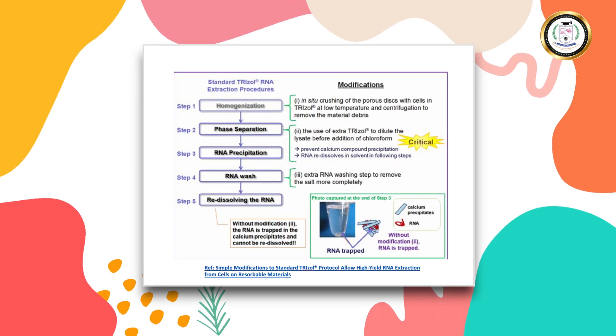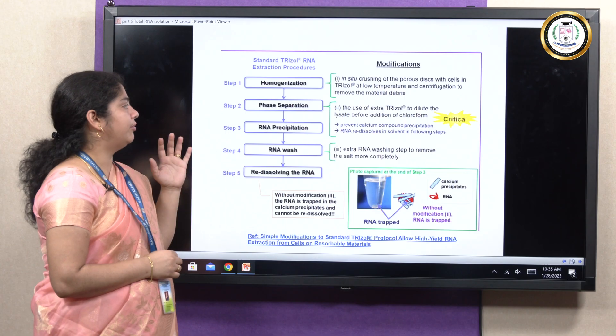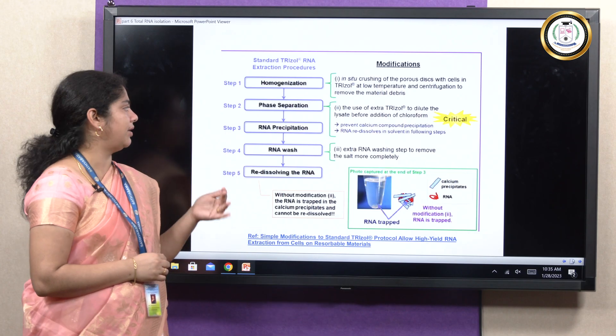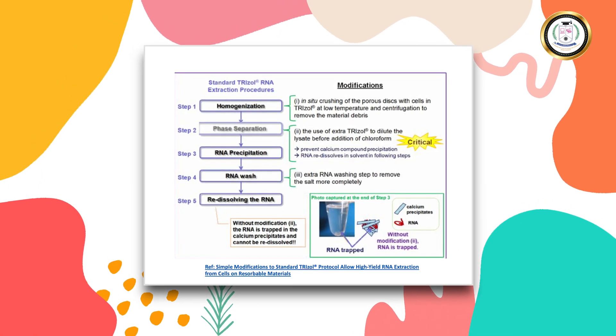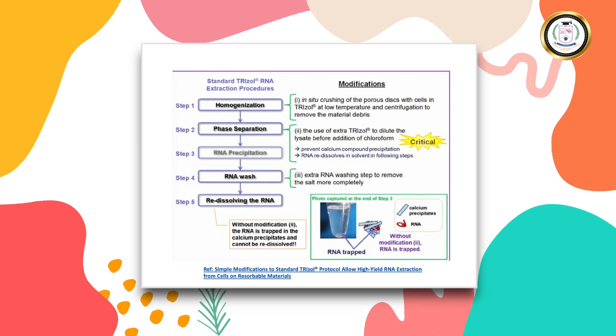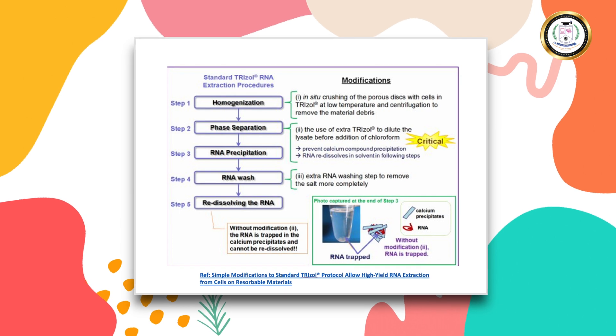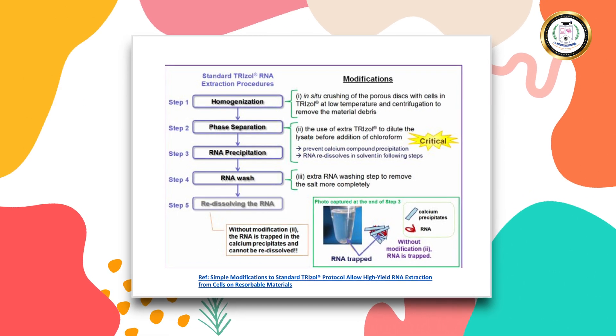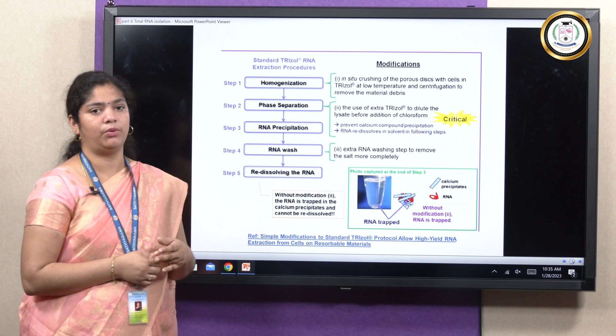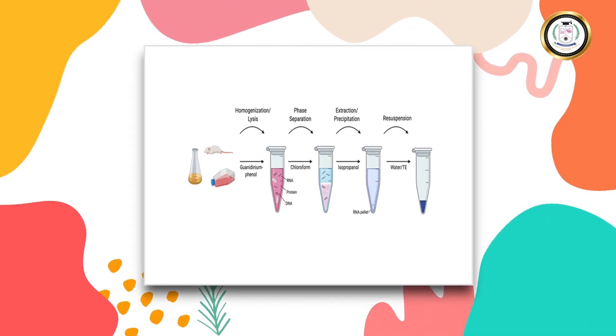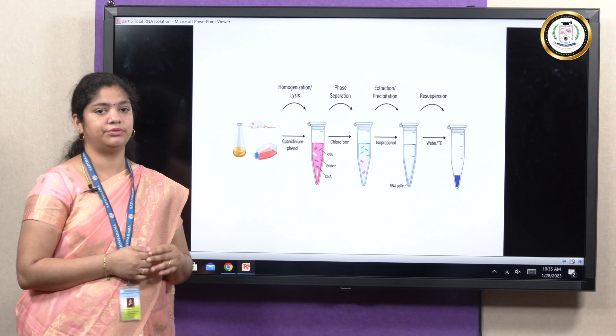So the number step 1 is homogenization, where the cells are now lysed. Then post lysing, we have to do phase separation, where there is separation of aqueous phase and organic phase. Then the RNA has to get precipitated out of the sample. Now the RNA is washed to ensure there is less impurity, and then we can re-dissolve the RNA in either TE buffer or even in sterile water. Since RNA is not that stable, the RNA is dissolved in TE buffer and then ensured it is frozen.